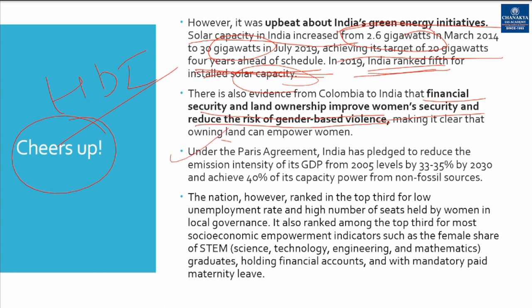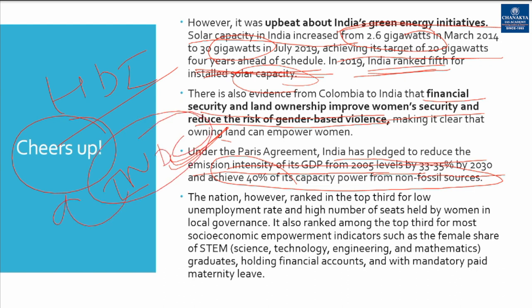Under the Paris Agreement, India has pledged to reduce the emission intensity of its GDP from 2005 levels by 33-35% by 2030, and achieve 40% of its power capacity from non-fossil fuels. India is doing very well on these INDCs — Intended Nationally Determined Contributions. India is also ranked in the top third for low unemployment rate and high number of seats held by women in local governance, as well as most socio-economic empowerment.